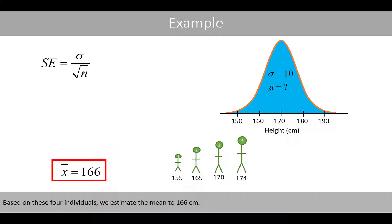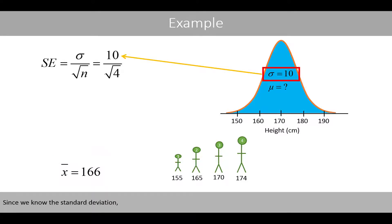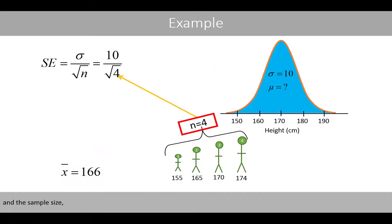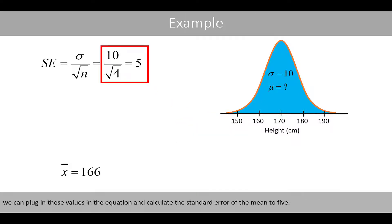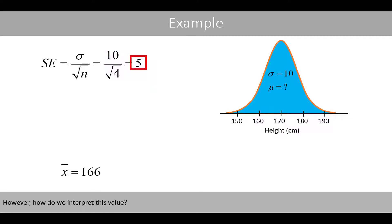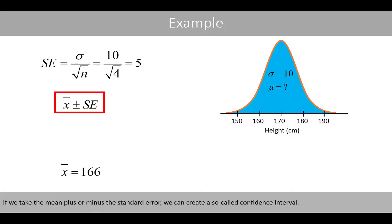Based on these four individuals, we estimate the mean to 166 centimeters. Since we know the standard deviation and the sample size, we can plug in these values in the equation and calculate the standard error of the mean to 5. However, how do we interpret this value? If we take the mean plus or minus the standard error, we can create a so-called confidence interval.